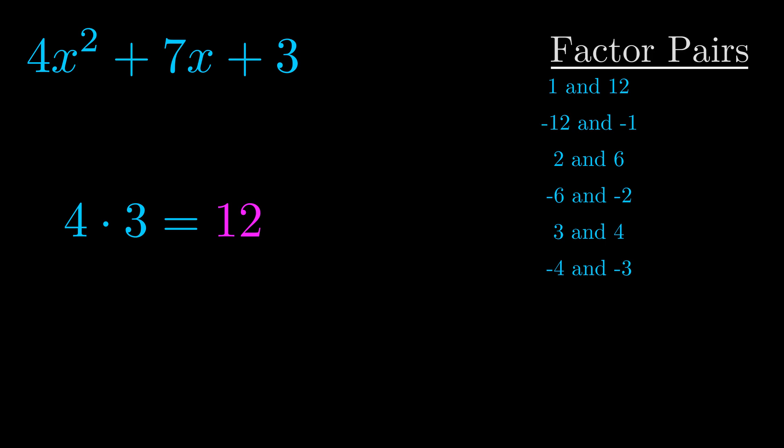The b value is the coefficient on the x term. That's the middle term, the one that we haven't done anything with yet. And really this is the only factor pair that we need.